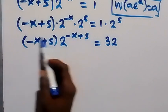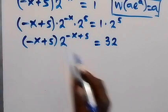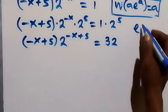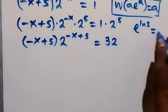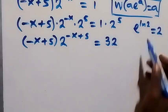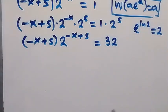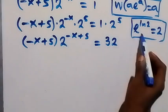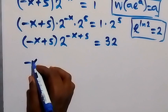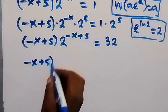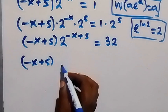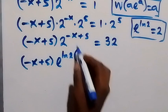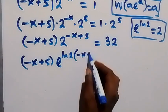Now the power and the coefficient are related. We can write 2 as exponent of ln 2, since exponent and ln cancel out leaving 2. So instead of writing 2 here, we replace it with exponent of ln 2, giving us minus x plus 5 times exponent of ln 2 all in the bracket, with power minus x plus 5.